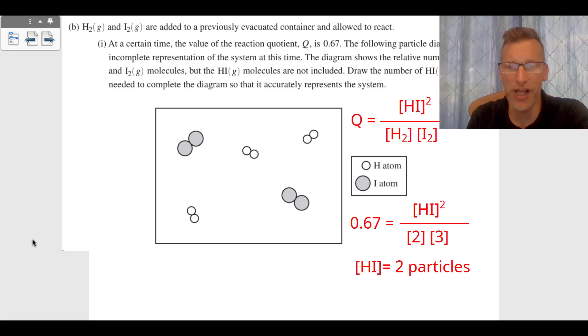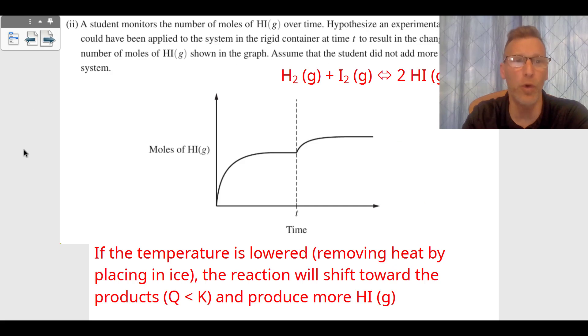So I plugged in two and three on the denominator there. When you multiply that equals six, you take your algebra. Six times 0.67, that gives us four, which means HI, what squared equals four? It's got to be two, which means I need to draw in two particles of HI, and that's what I did right there. I drew in two particles of HI, and that's going to be a second point for part B1.